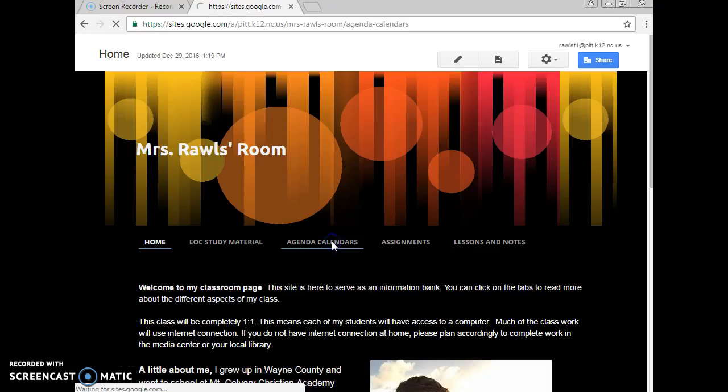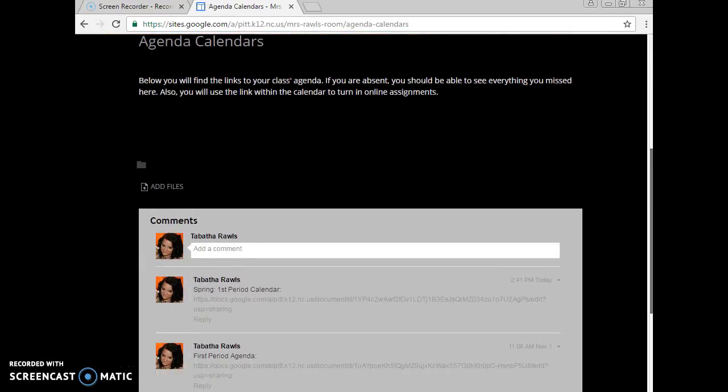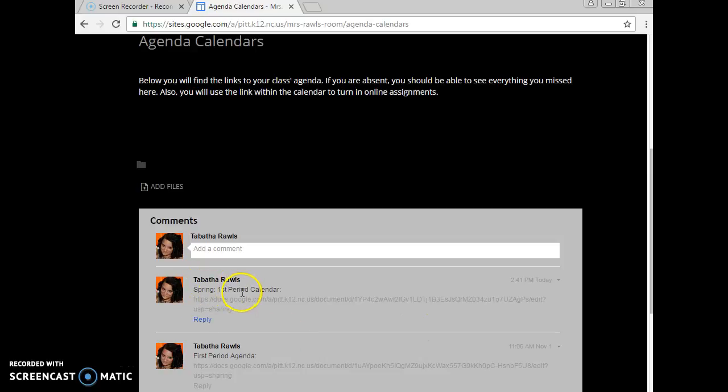If you click on the link that says agenda calendars and give it a second to load and go all the way down you'll see comments. You need to find spring and then your proper period. We'll go ahead and just look at first period because they're all pretty similar.